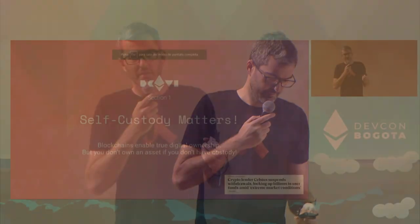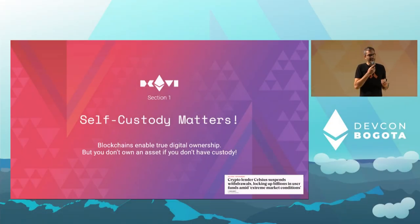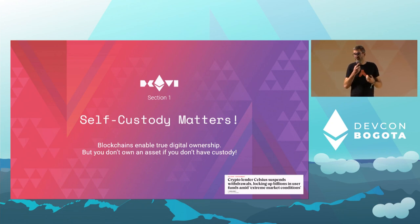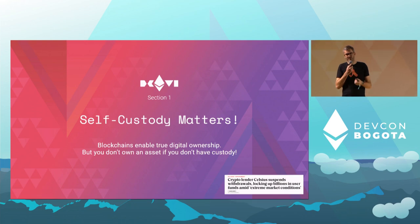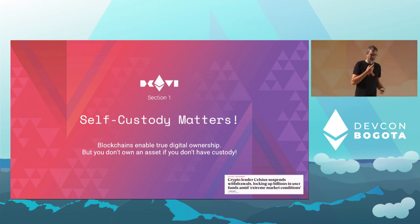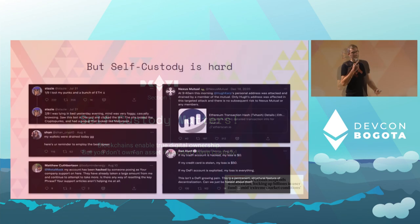Let me start with a pretty obvious statement: self-custody matters. Blockchain is an amazing technology that for the first time can enable true digital ownership. But you don't really own an asset if you give custody to someone else, to a third party. The recent events of this summer — the problem with Celsius — are a good wake-up call of what bad things can happen if we rely on custodial solutions.